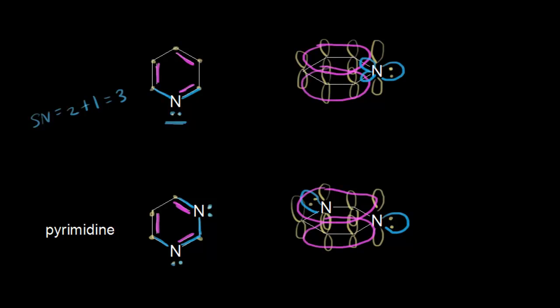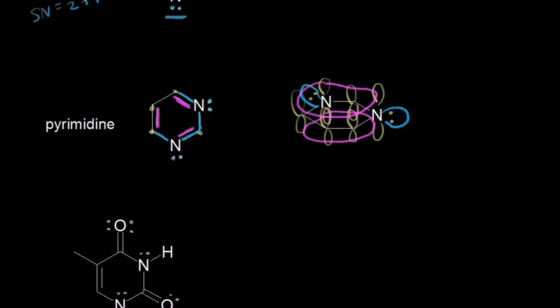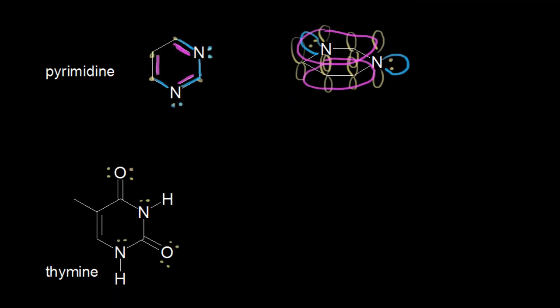The pyrimidine general structure is actually very important in biochemistry. Here's an example: the thymine molecule, which is found in DNA. You'll always see in textbooks that thymine has a pyrimidine ring, but at first it's not so obvious that a pyrimidine ring is present in thymine.